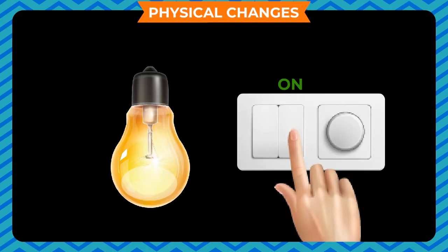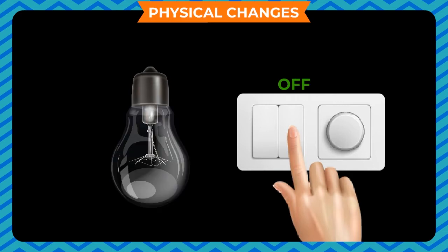To show that switching on or off an electric bulb is a physical change: switch on the electric bulb in your classroom. We observe that the element of the bulb becomes hot and gives heat as well as light. There is a change, but the element remains composed of the same material. Now switch off the bulb — the element regains its original state and stops giving heat and light. Thus the change is temporary and no new substances are formed. Hence, it is a physical change.